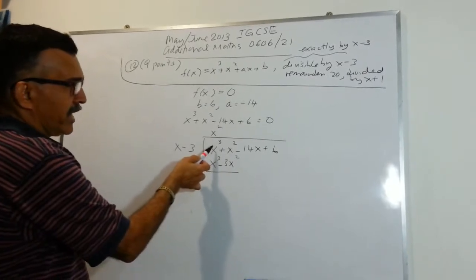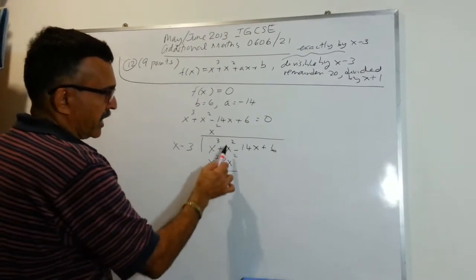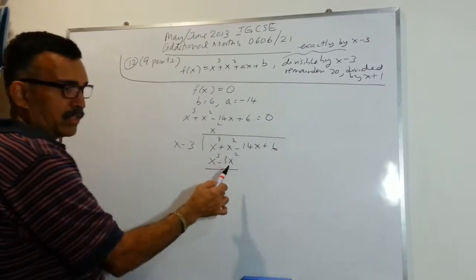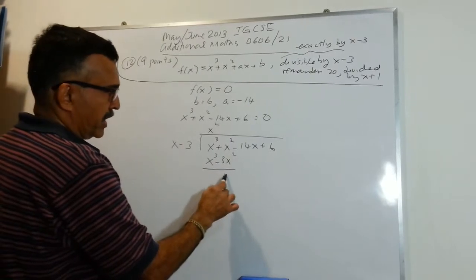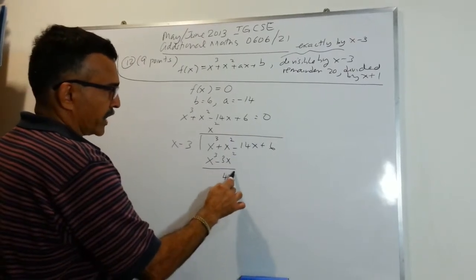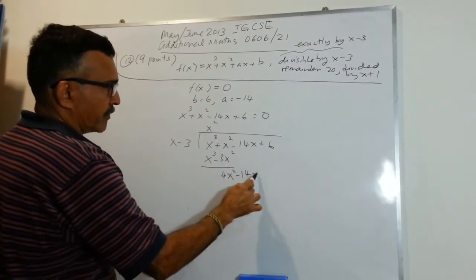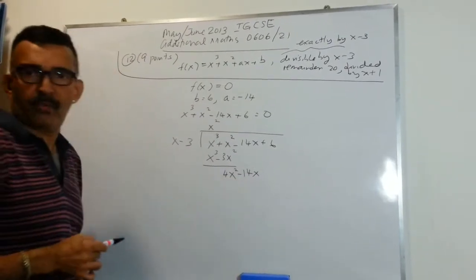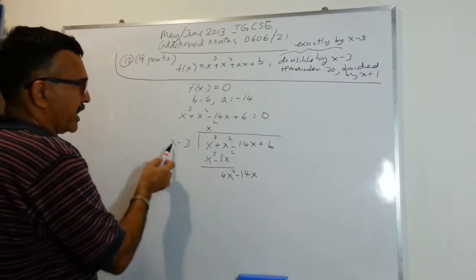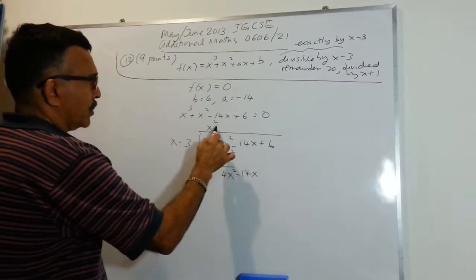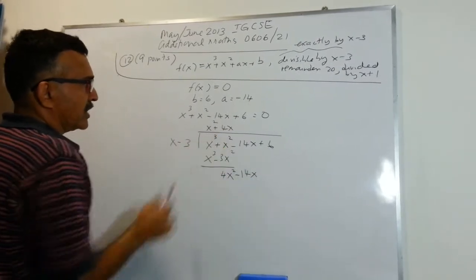Take this line minus this line: x squared minus minus 3x squared will be 4x squared. Bring down minus 14x. Take the 4x squared and divide by x, you will get plus 4x.